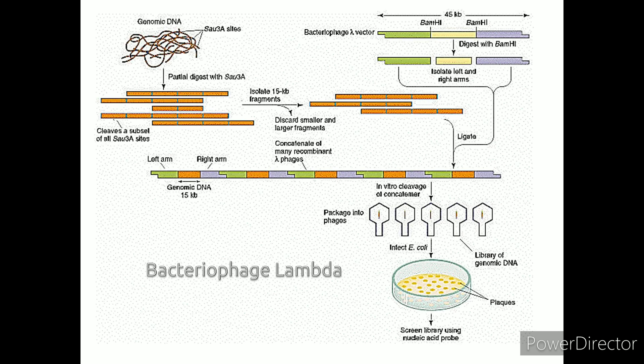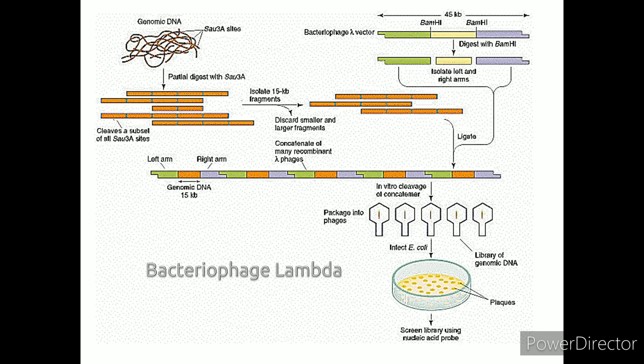Bacteriophage lambda contains a central region of 15 kilobases that is not required for replication or formation of progeny phage in E. coli. Thus, lambda can be used as a cloning vector by replacing the central 15 kb with 10–15 kb of foreign DNA.